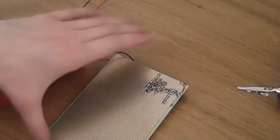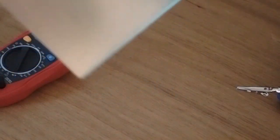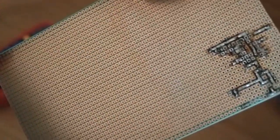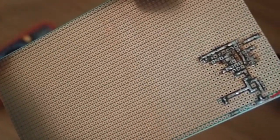If you look close it doesn't look very suspicious. They are the regular copper islands and some kind of solder mask between.